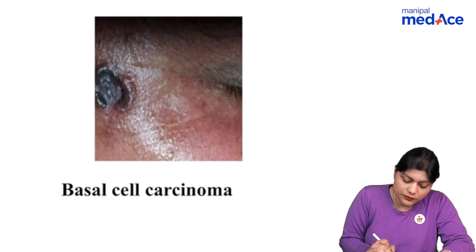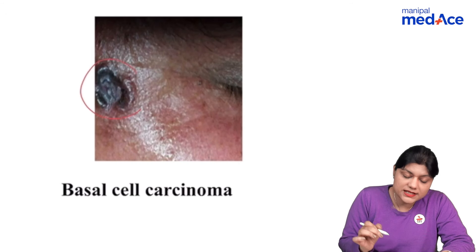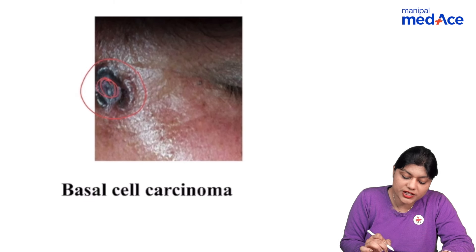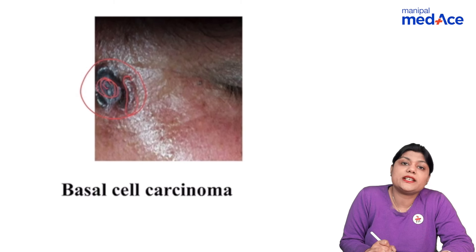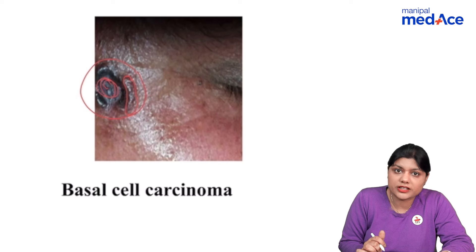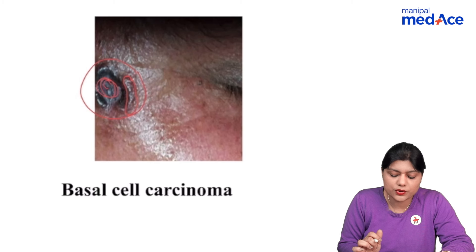Basal cell carcinoma — the patient has a nodule with central ulceration and pearly, rolled margins. It is mostly present over the face, and the most common location on the face is the nose.